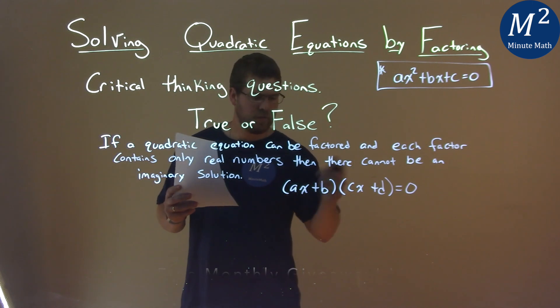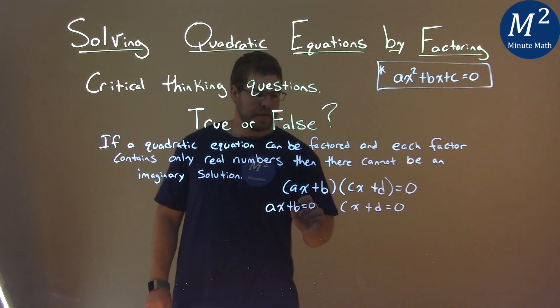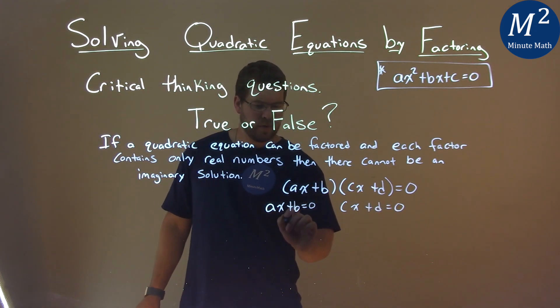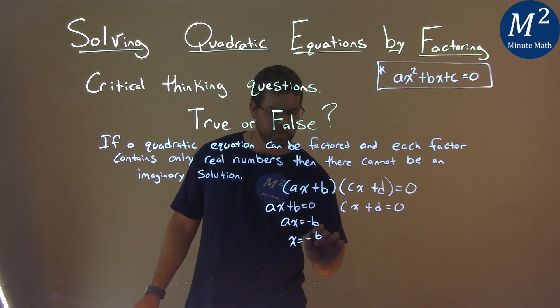So, if we solve this, right? AX plus B equals zero, and CX plus D equal to zero. Well, solving that, you subtract B to both sides, and AX equals negative B, divide both sides by A, and X equals negative B over A.